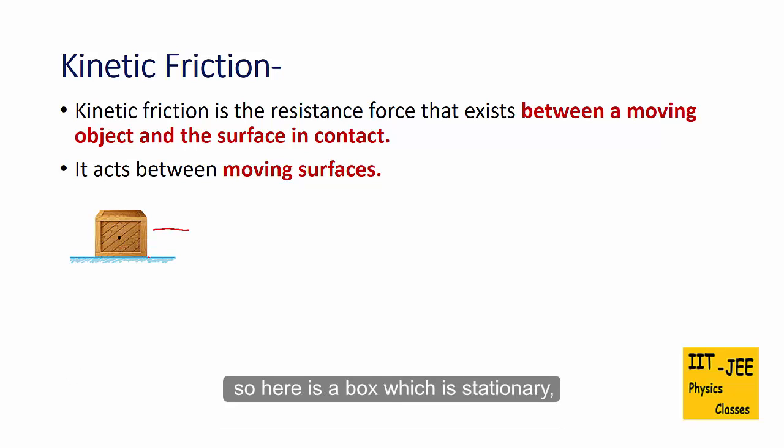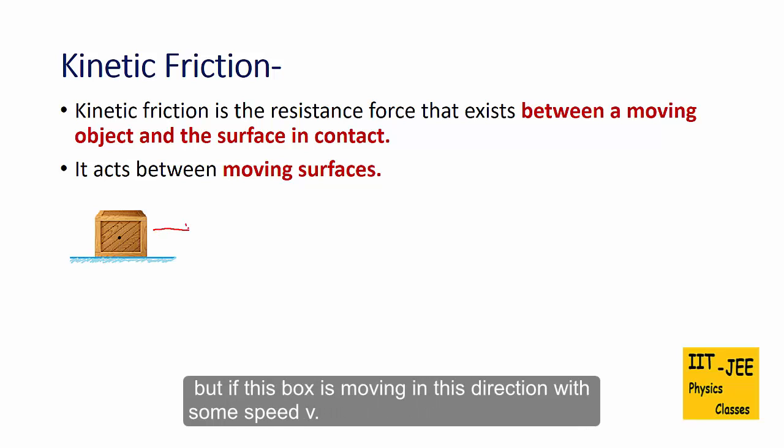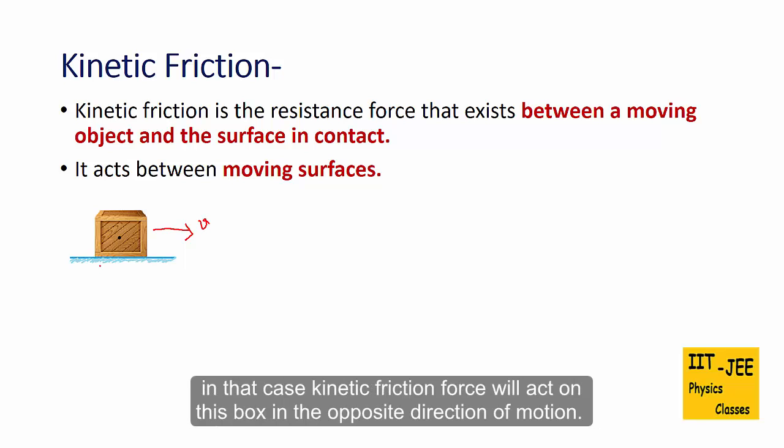So here is a box which is stationary. The static friction force will act between the surfaces of this box and this floor. But if this box is moving in this direction with some speed, in that case kinetic friction force will act on this box in the opposite direction of motion.